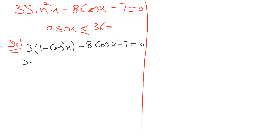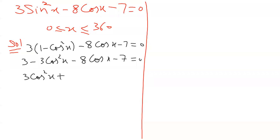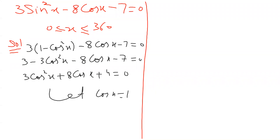3 minus 3 cosine squared x. I will do this question in a different way so you can understand different ideas. Rearranging: 3 cosine squared goes to the right and becomes positive, and minus 4 becomes plus 4 on the other side.